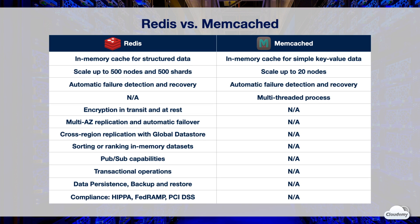You can enable automatic backups to back up the cluster on a daily basis, or create manual backups at any time. In the event of a failure, you can create a new cluster and restore data from the backup. ElastiCache for Redis provides a secure in-memory data store that is compliant with HIPAA, FedRAMP, and PCI DSS.